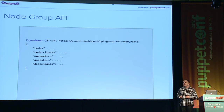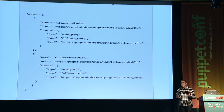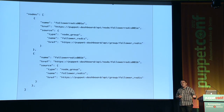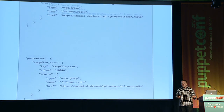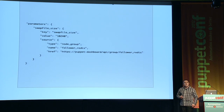This is the JSON structure for what a group looks like. It has a list of the nodes, a list of the classes on the nodes, and so on. The nodes generally give a name and a URL to find more data about the specific nodes. You can see all the nodes in the group, what classes are installed, and the parameters we've set — very similar to what's in the Puppet Dashboard UI, but programmatically available to software.